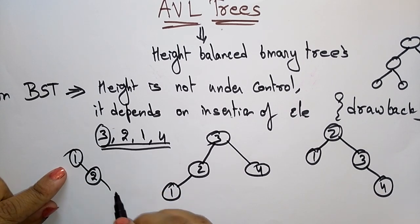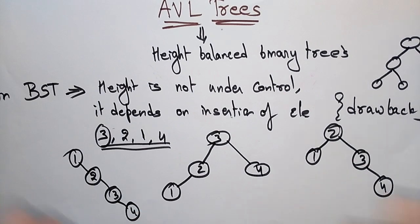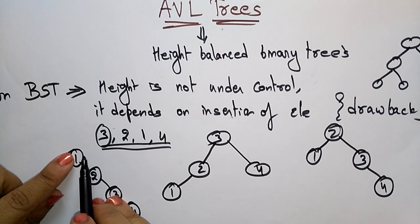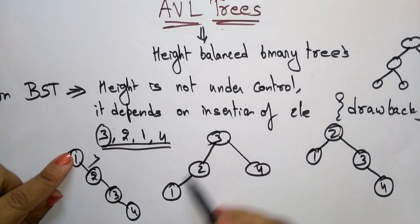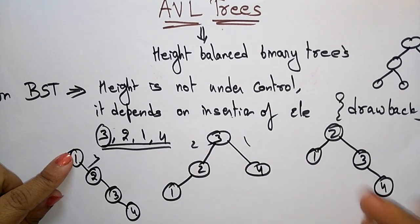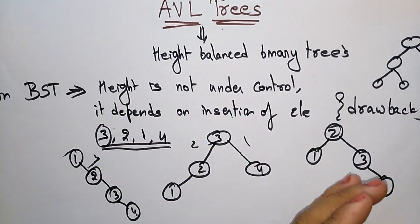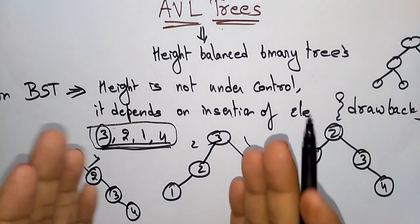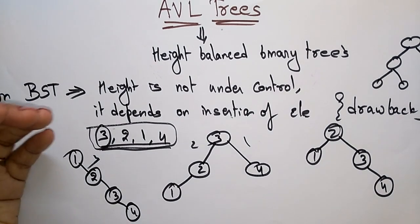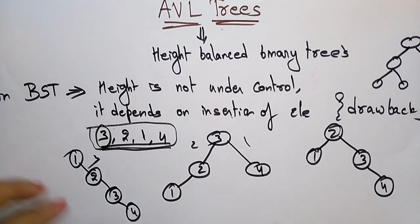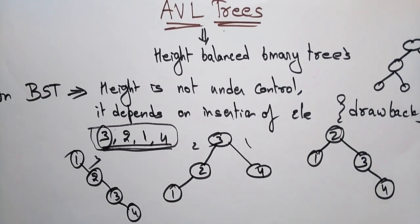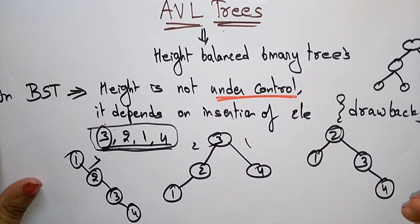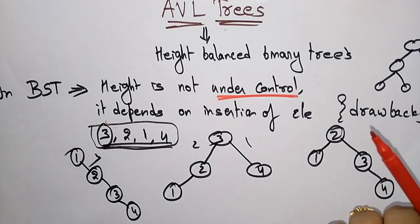With different root choices, the height varies. For one arrangement the height is 3, and for another the height of the left subtree is 2 and the right is 1. For each tree the height is varying even though the same set of nodes is used. In a binary search tree you can build the tree in whatever pattern you want, so the height is not under control.